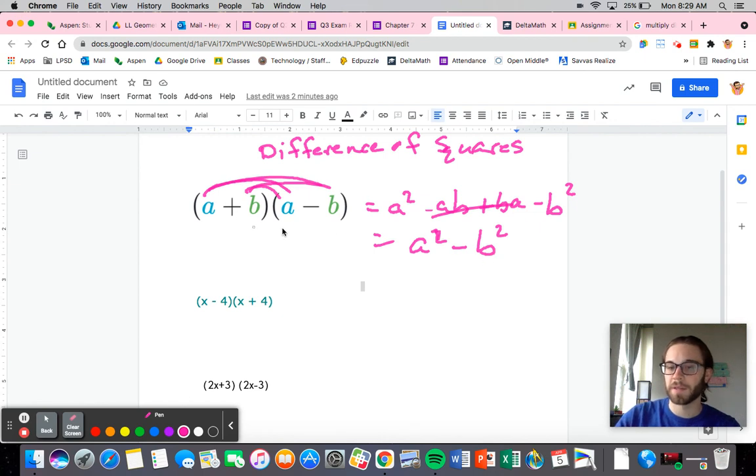So what's a? a is your first term, and b is your second. Okay, so for example, this is the difference of squares. I have x minus 4, x is a, 4 is b. So my answer is going to just end up being x squared minus 16.